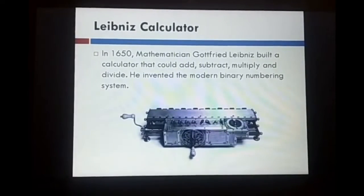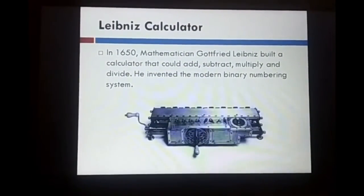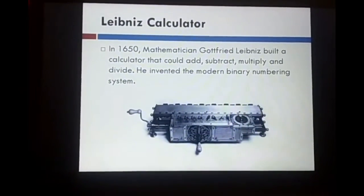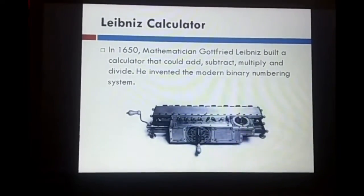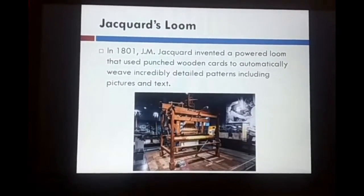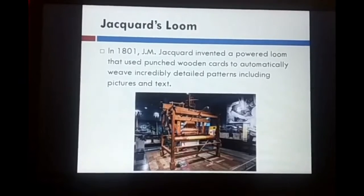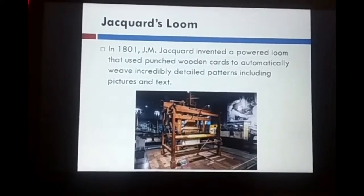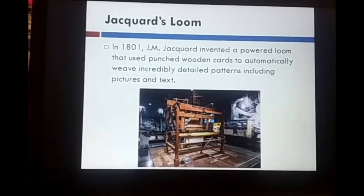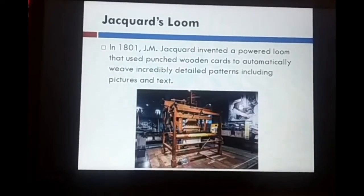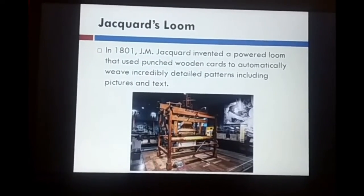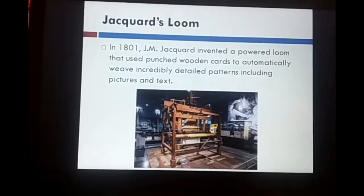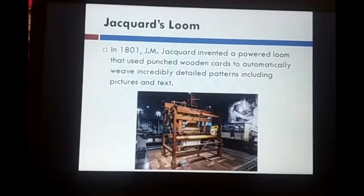Leibniz Calculator. In 1650, mathematician Gottfried Leibniz built a calculator that could add, subtract, multiply, and divide. He invented the modern binary numbering system. Later, J.M. Jacquard invented a powered loom that used punched wooden cards to automatically weave incredibly detailed patterns, including pictures and text. It is a silk cloth machine and it is the base model of the punched card, which is used in the first generation of computers to store information.